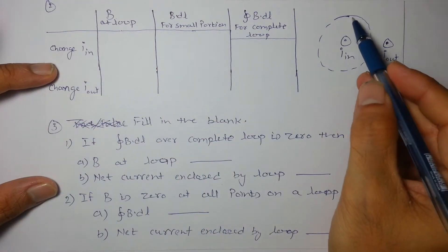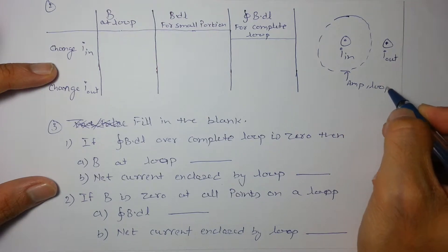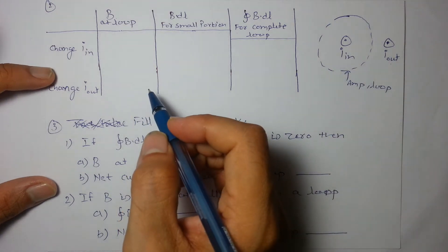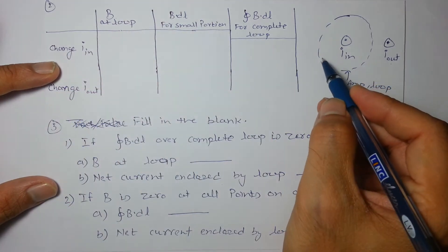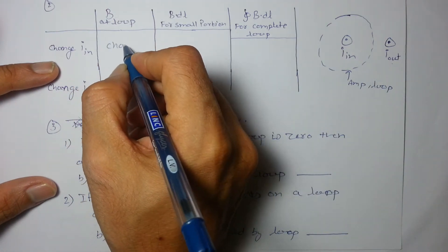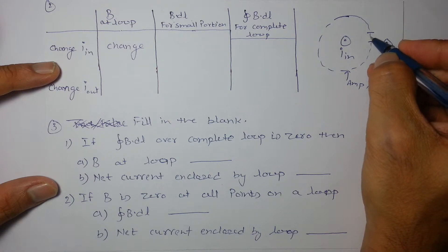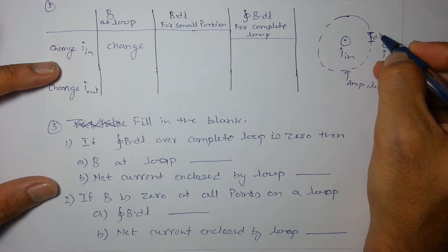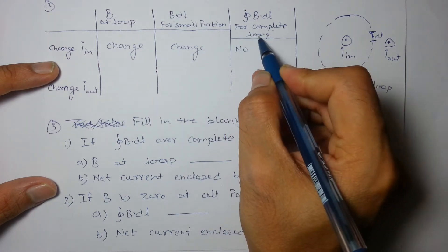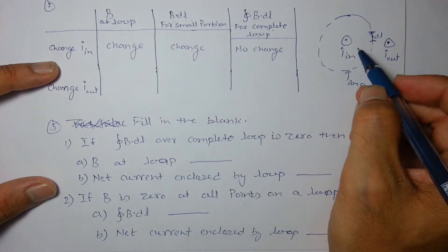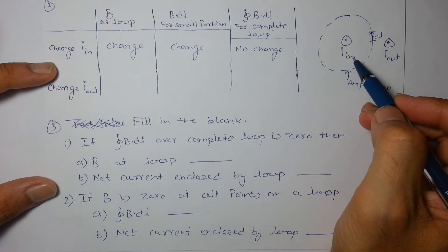Next question: In this Ampere's loop, there is one enclosed current i_in and one outside current i_out. If I change i_in, then the magnetic field at the loop changes — yes it will change. Also, B dot dl for a small portion will change. If I change i_out, then obviously the magnetic field at that point changes, and the B dot dl for a small portion also changes.